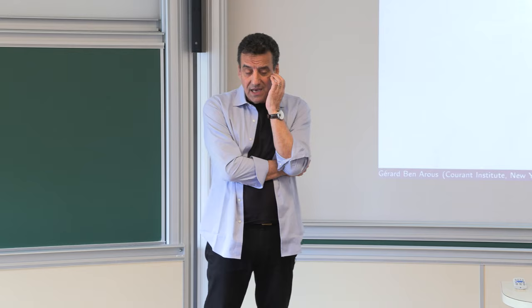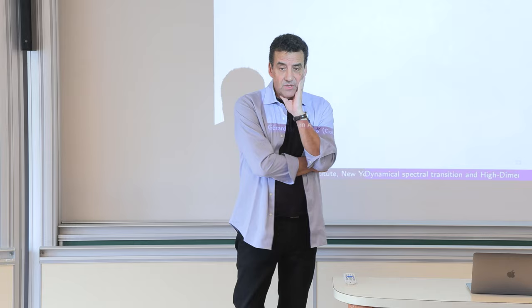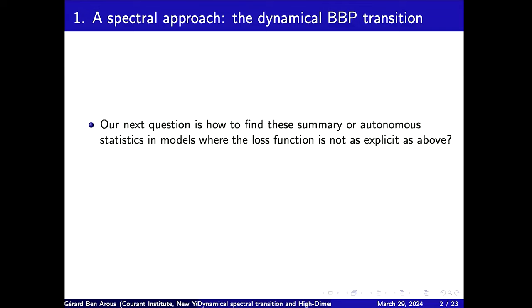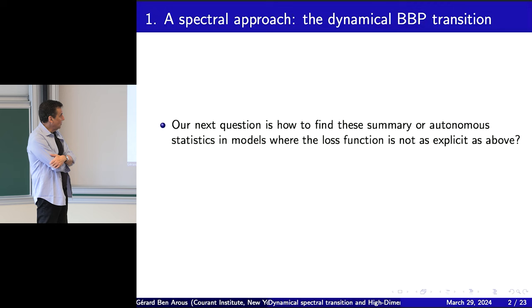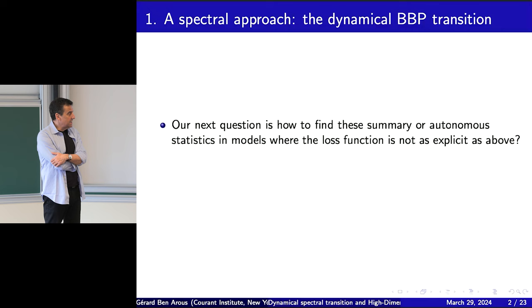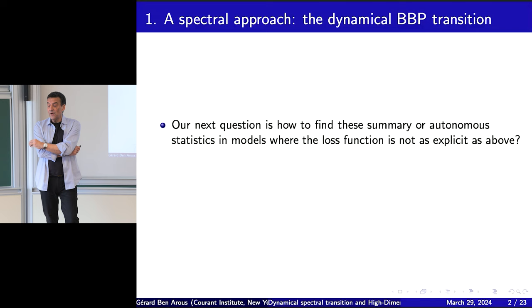I propose here this spectral dynamical BBP transition, which I believe is general. I will treat this on two examples. The advantage here is that this would give you a way to find summary statistics algorithmically, without knowing anything.